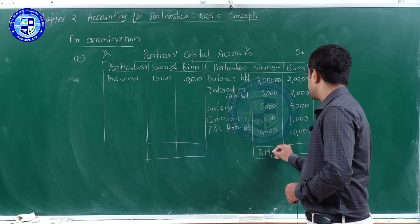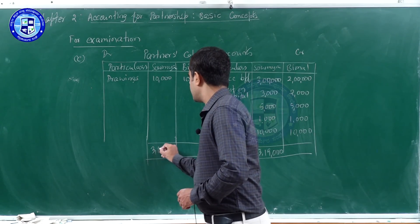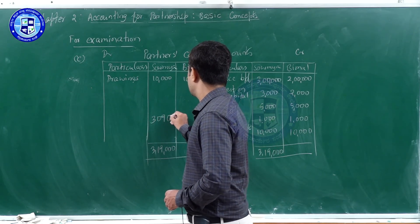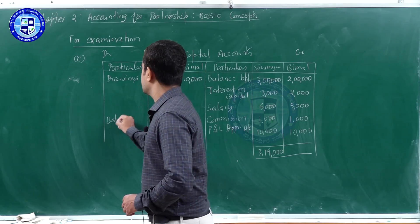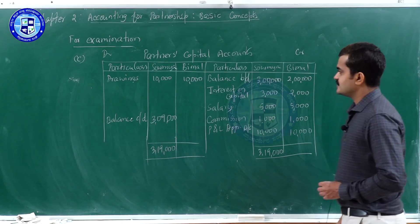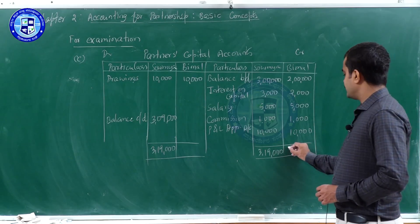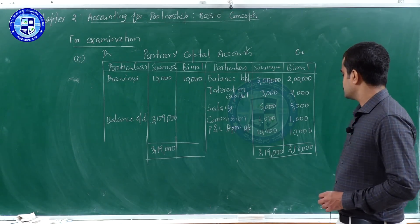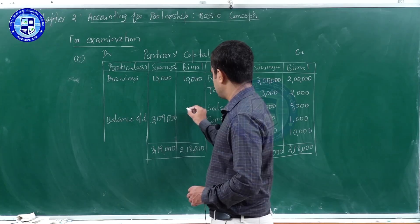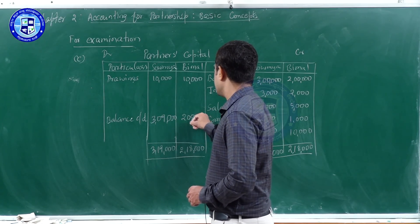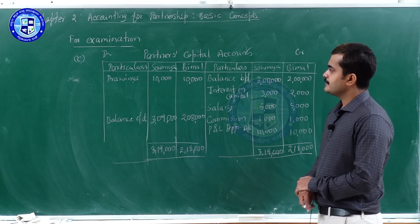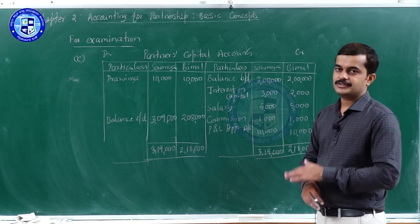Share of profit: ₹10,000 each. For Soumya, the credit side total is ₹3,19,000; deducting drawings of ₹10,000 gives a balance carried down of ₹3,09,000. For Bimal, the credit side total is ₹2,18,000; deducting drawings of ₹10,000 gives a balance of ₹2,08,000. This is how we prepare imaginary capital accounts of 2 partners with 5 transactions under the fluctuating capital system.